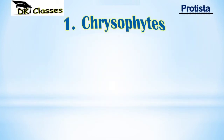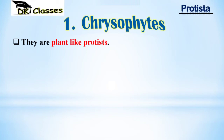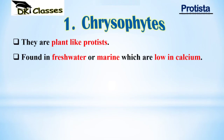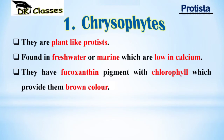Chrysophytes are plant-like Protista; they can be unicellular or multicellular. They are found in freshwater and marine water where the calcium content is low. They have a pigment called fucoxanthin along with chlorophyll — fucoxanthin provides them a brown color, and chlorophyll is for making their own food through photosynthesis in the presence of sunlight.